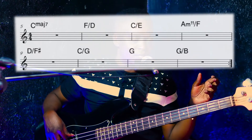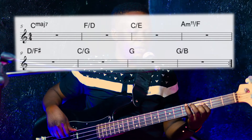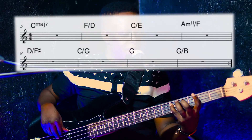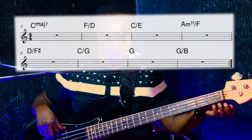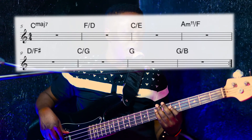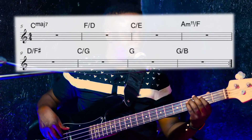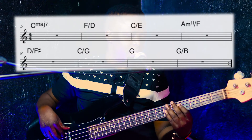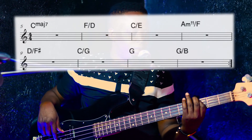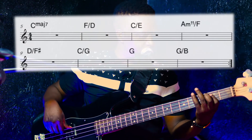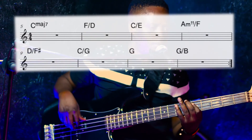So when you realize it in slash chords, you always play what's on your right hand. Chord one being C, you just leave it as C. Chord two is F slash D — you play D. Next is C slash E — you play E, either the open E or this E. Next chord, A minor stroke F — you play F. Next chord, D stroke F sharp — play F sharp. Then C slash G — play G. The next chord is just a G — you play G. And the last chord, G stroke B — play B. Then going back to C.